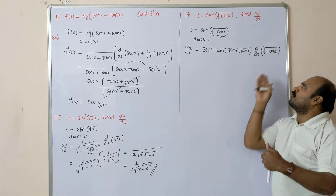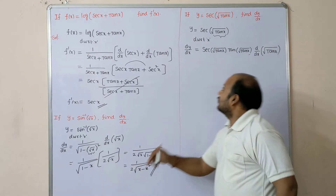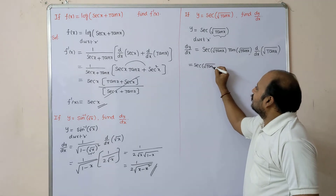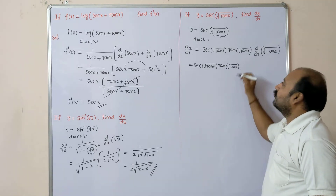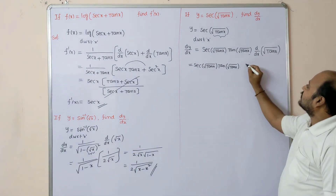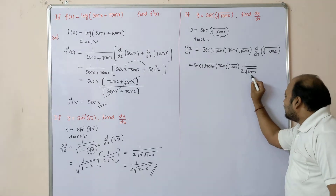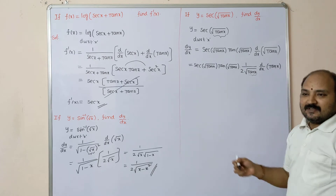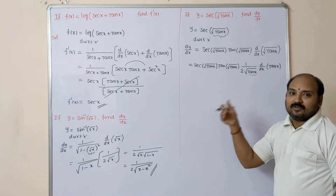d/dx of √tan x is in the form of √x, so d/dx of √(tan x) = 1/(2√tan x). But again we cannot stop — tan x must also be differentiated. d/dx of tan x = sec²x. This is called the chain rule. I am not using u and v formulas separately; I am doing it directly, which is the easy way.